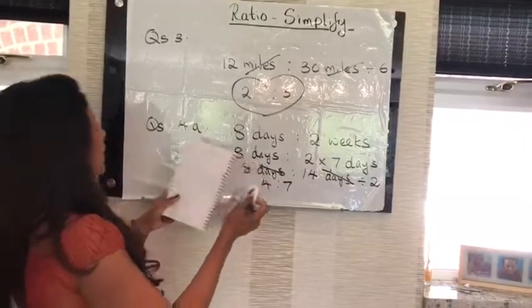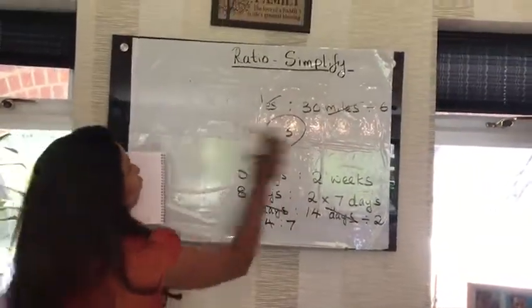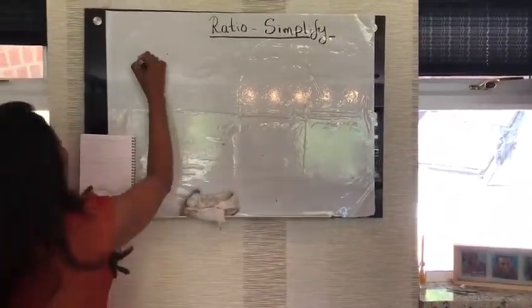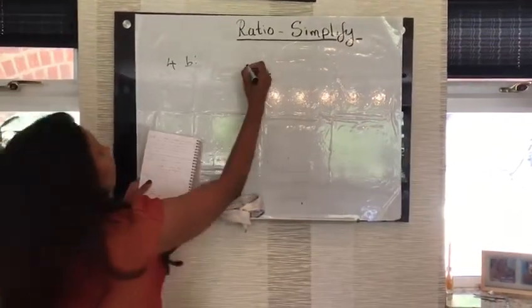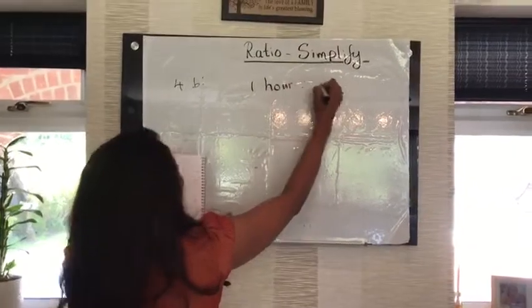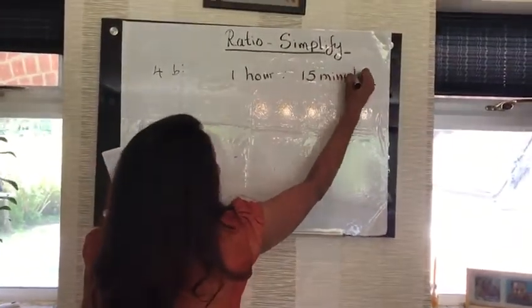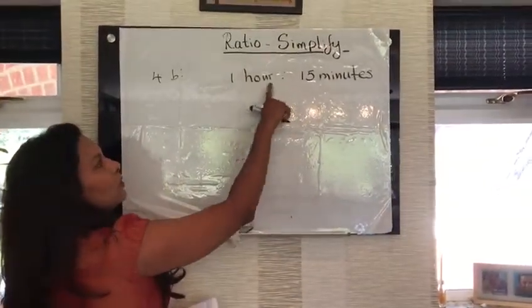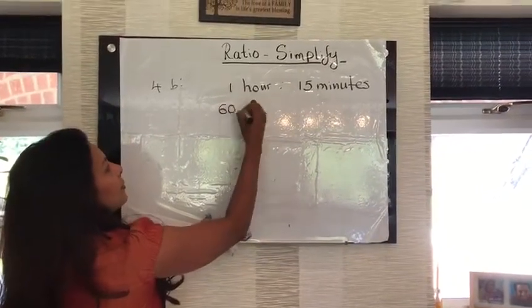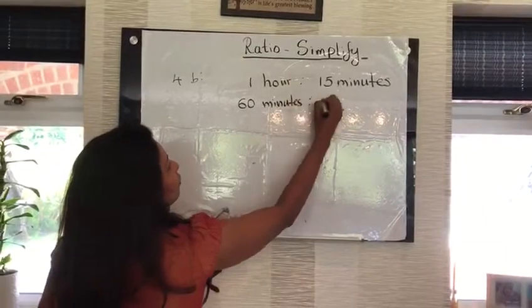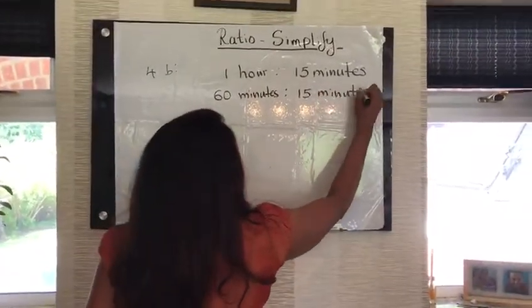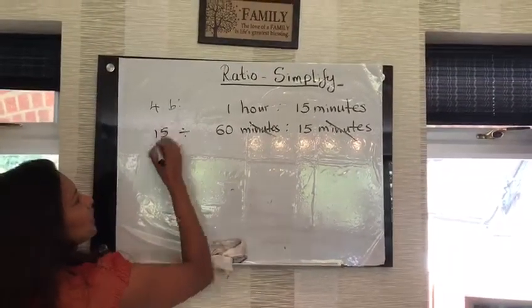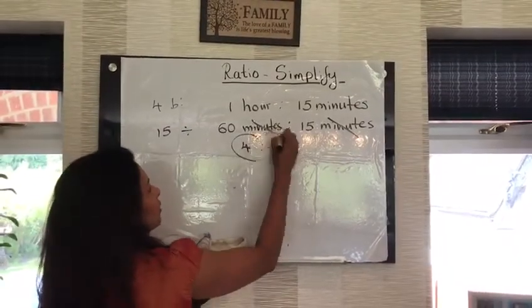I'm going to do 4b. So, let's go for question number 4b. I have 1 hour to 15 minutes. Again, look at the small measurement. Minutes are smaller. So, I'm going to turn 1 hour to minutes. How many minutes in an hour? 60 minutes to 15 minutes. Now, when they are the same on both sides, I can cancel them. I can divide both numbers by 15. So, 15 times 4, 15 times 1. That's the final answer.